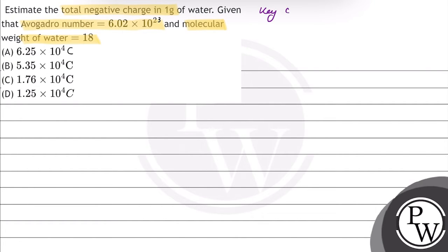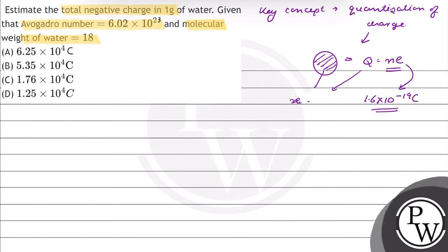The key concept for this question is quantization of charge. Quantization of charge means total charge Q equals an integral multiple of e, where e equals 1.6 × 10^-19 coulomb. This means total charge Q is made up of multiples of e.